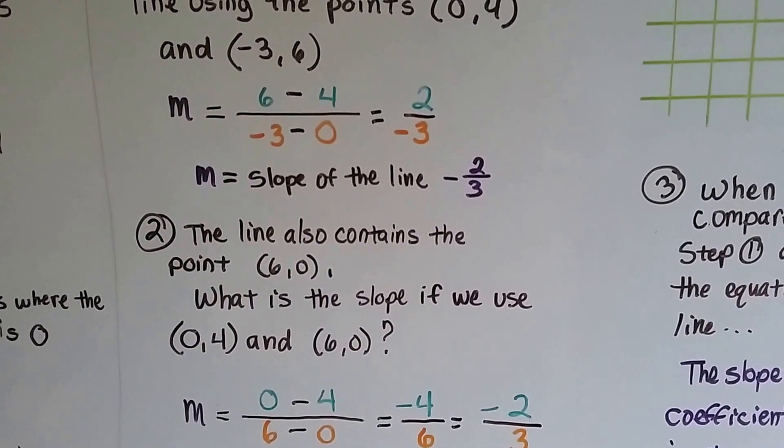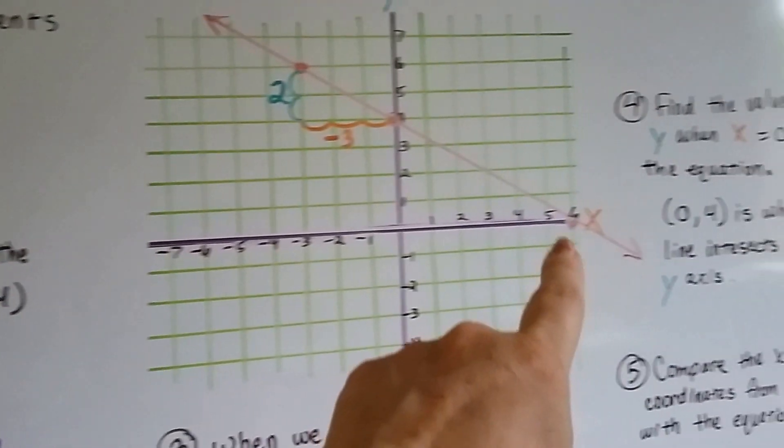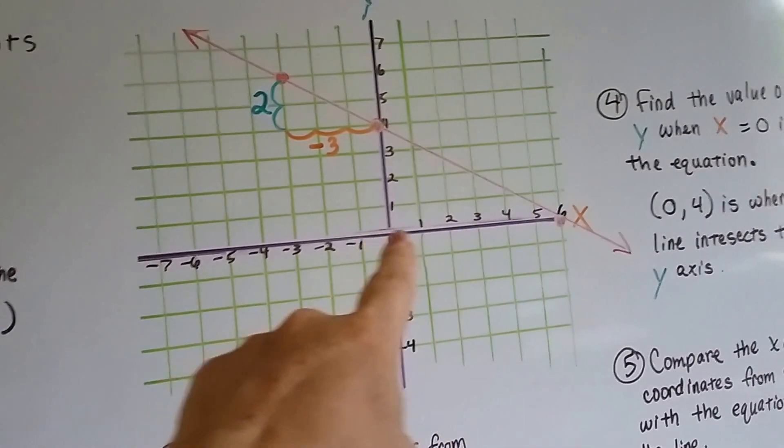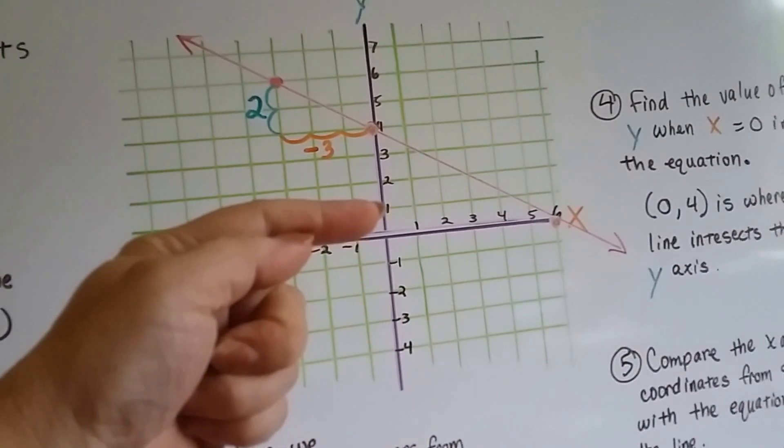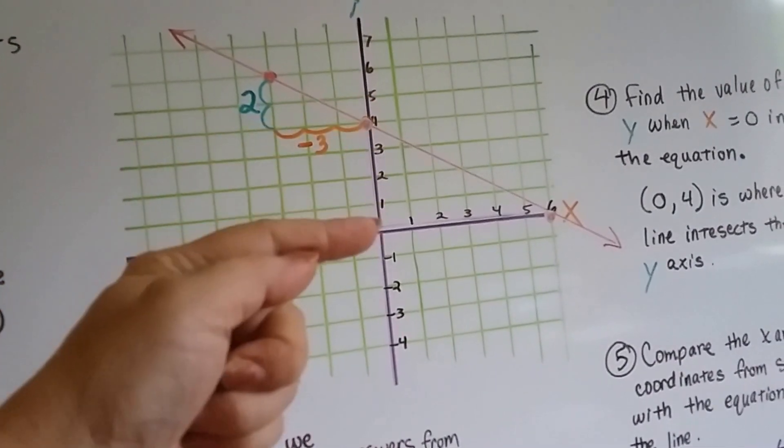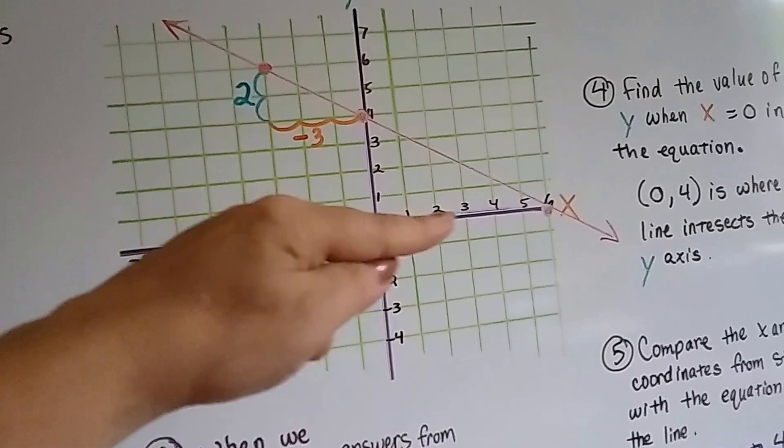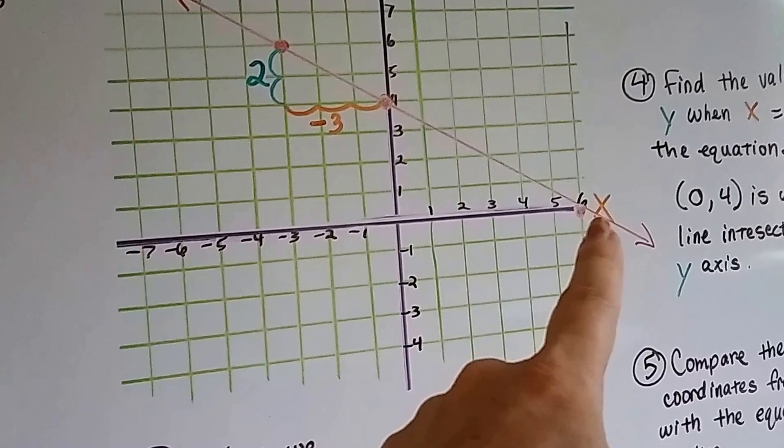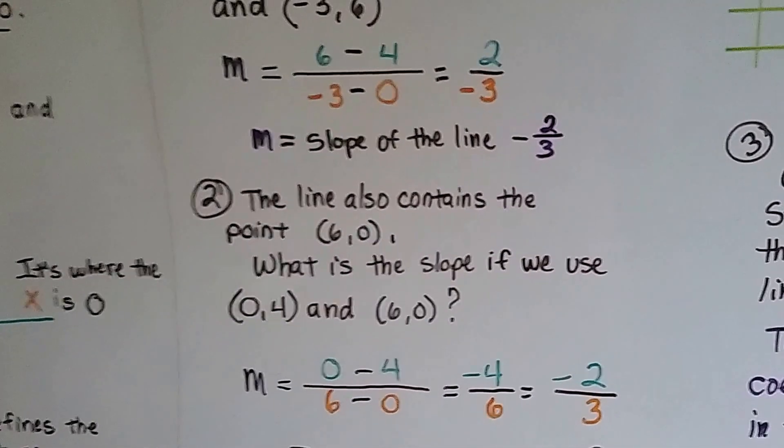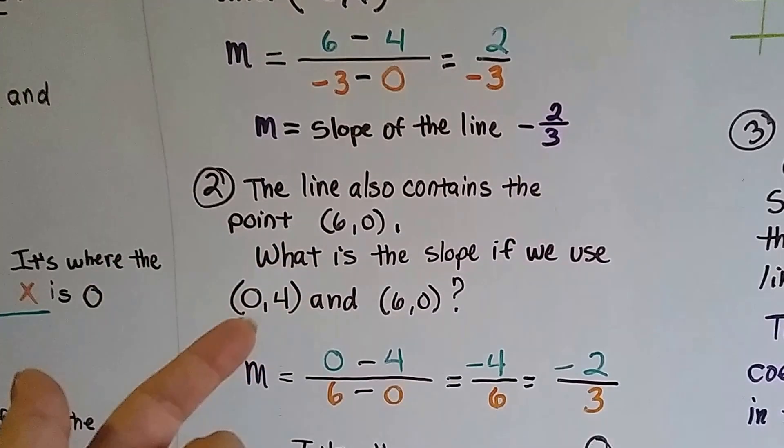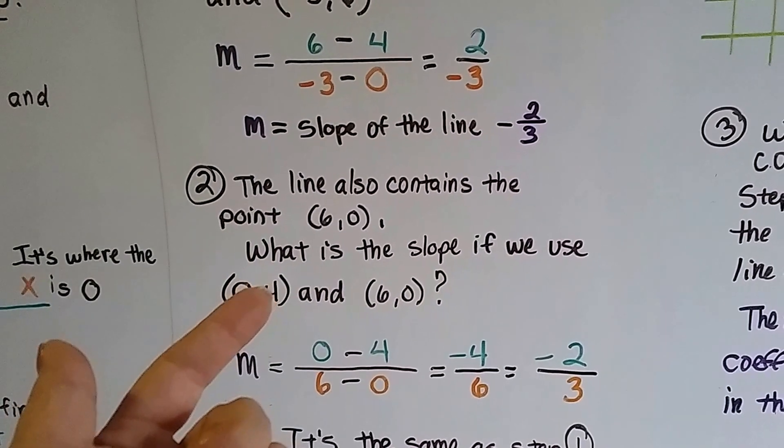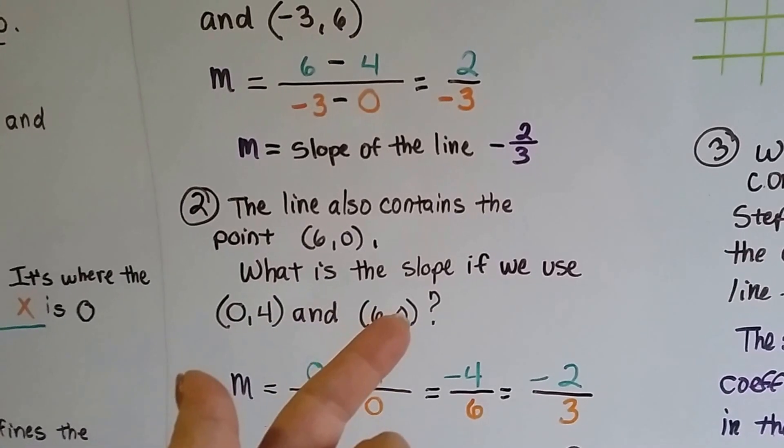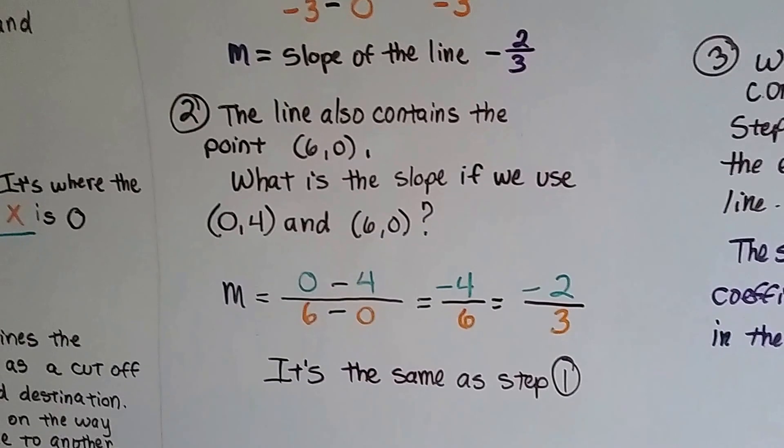Well, this line also contains the point (6, 0). That would be 6 for x and 0 on the y. Here's y's 1, 2, 3, 4. So to be right here on x's line, y would be at 0. So this is 6, 0. And the line hits it. Well, since it contains that 6, 0, we can use the (0, 4), that y-intercept point, and this other point, (6, 0), to find the slope of the line. So, here's our two coordinates.